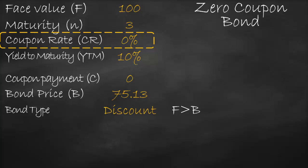Consequently, we could say that all zero coupon bonds are considered discount bonds. Because the bond price is the present value of face value, the present value will always be lower than the face value. This means the bond price will always be lower than face value, and consequently it will always be a discount bond. Also, the coupon rate will always be lower than yield to maturity — since coupon rate is zero, zero is always lower than the yield to maturity of 10 percent.